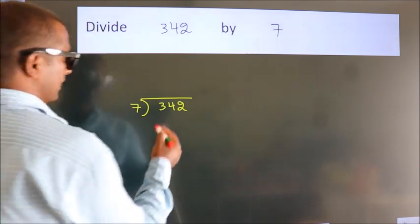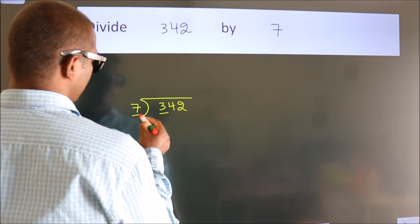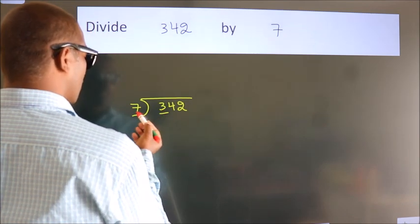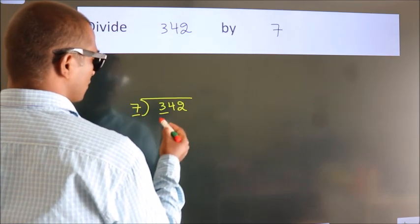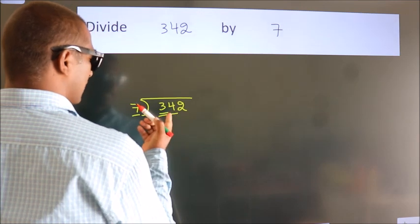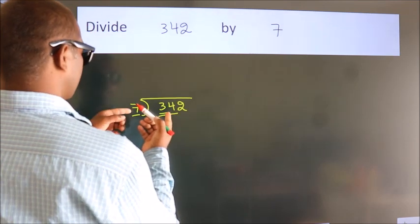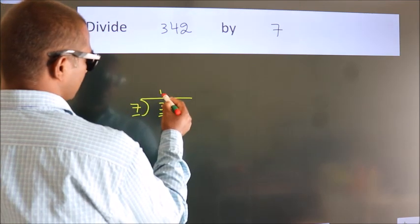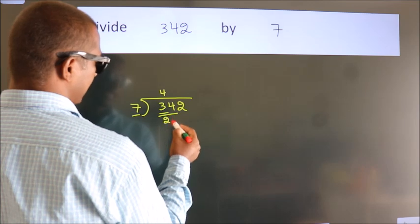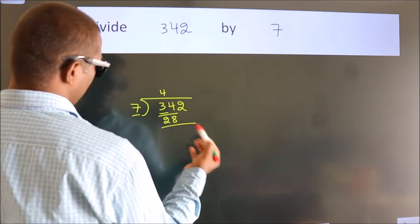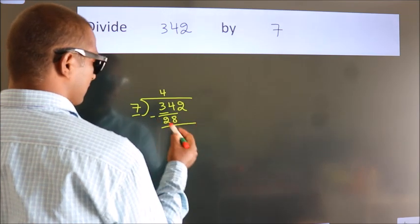Next. Here we have 3, here 7. 3 smaller than 7, so we should take 2 numbers, 34. A number close to 34 in 7 table is 7 fours, 28. Now we should subtract. We get 6.